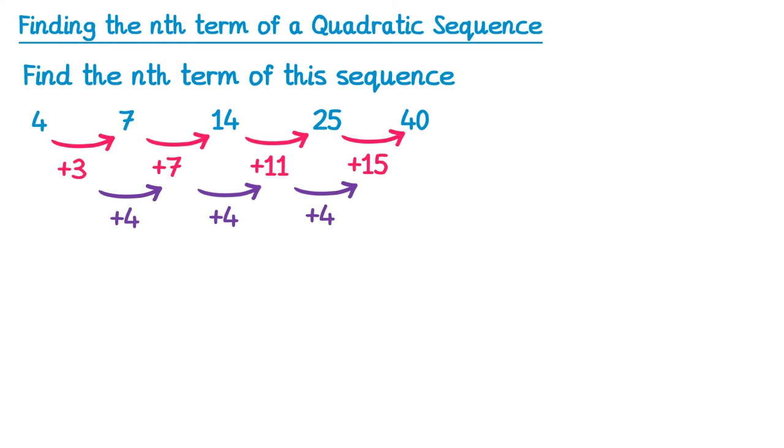We then take the second difference, which is 4, and half it. Half of 4 is 2. So the answer must start with 2n squared.